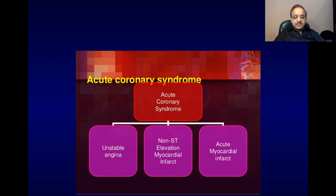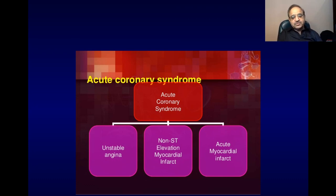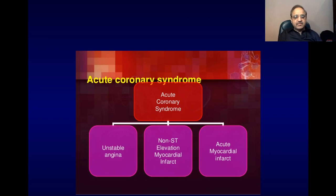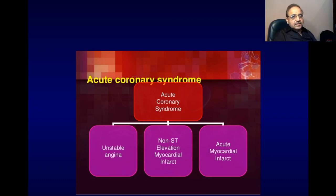Dear students, in the last presentation on ischemic heart disease, I discussed with you the pathophysiology of ischemic heart disease — the different risk factors responsible for formation of coronary artery plaque. We discussed different types of plaques: the plaque which causes stable angina and the plaque which causes unstable angina, myocardial infarction, or non-ST elevation myocardial infarctions.